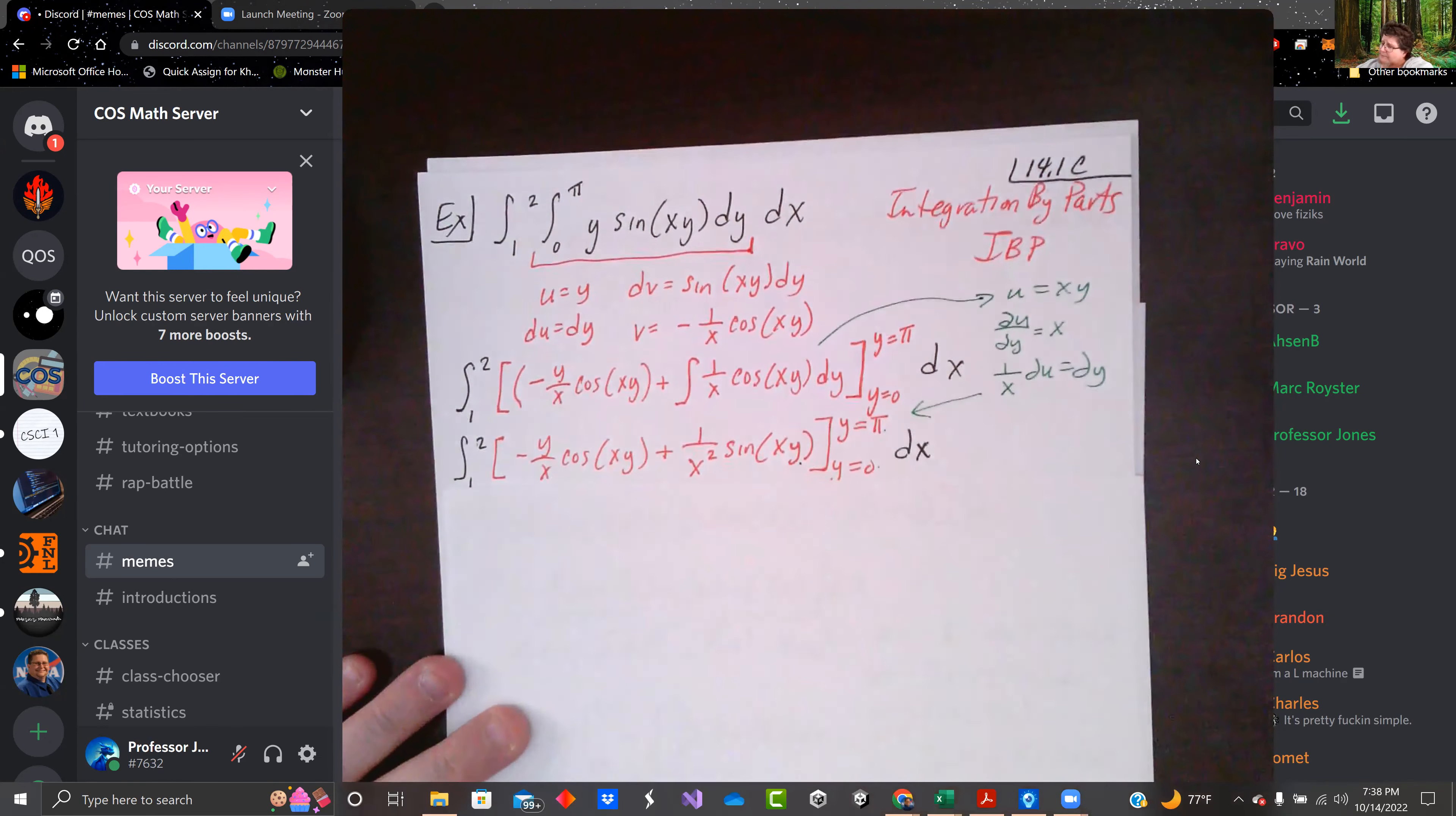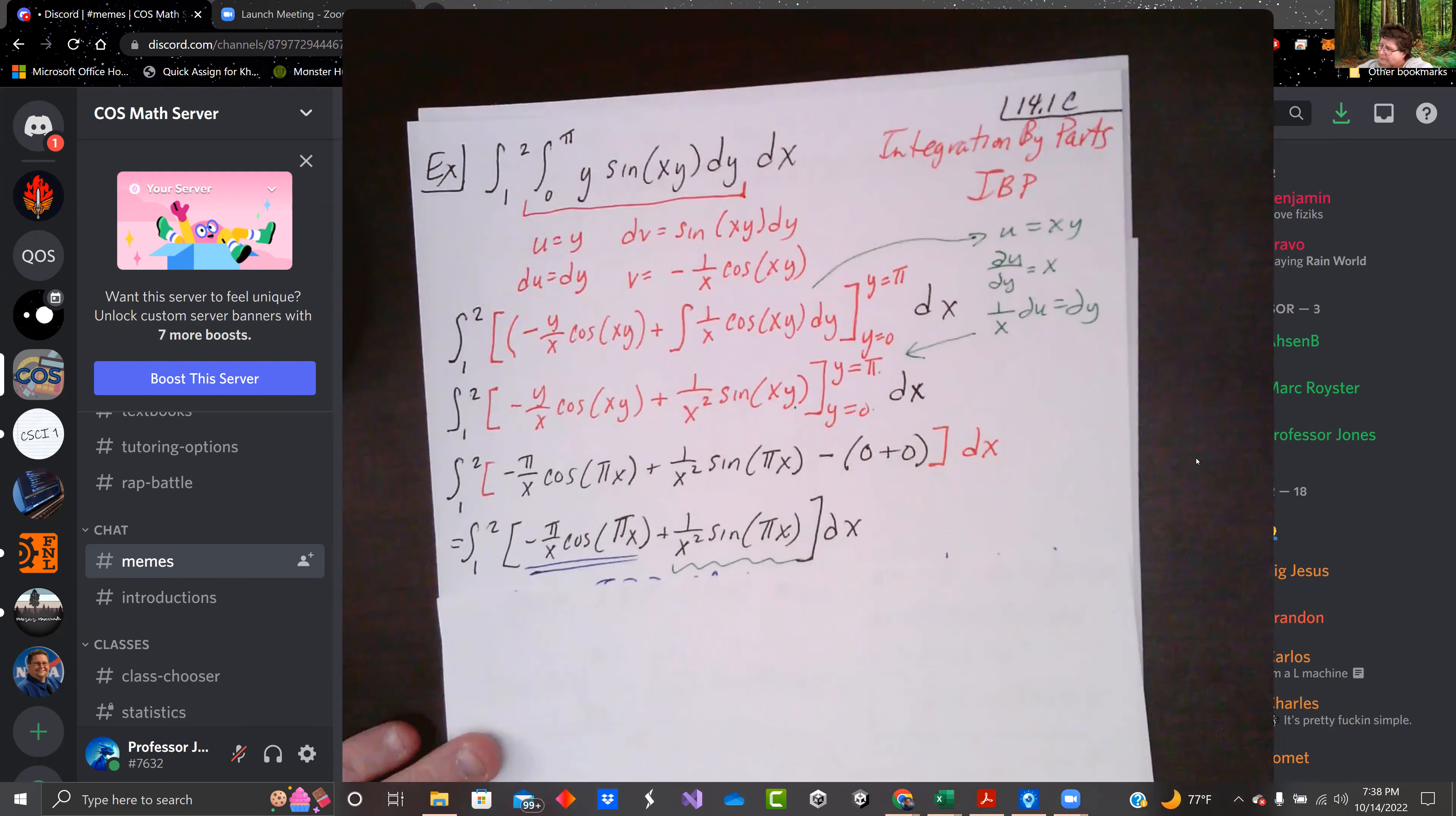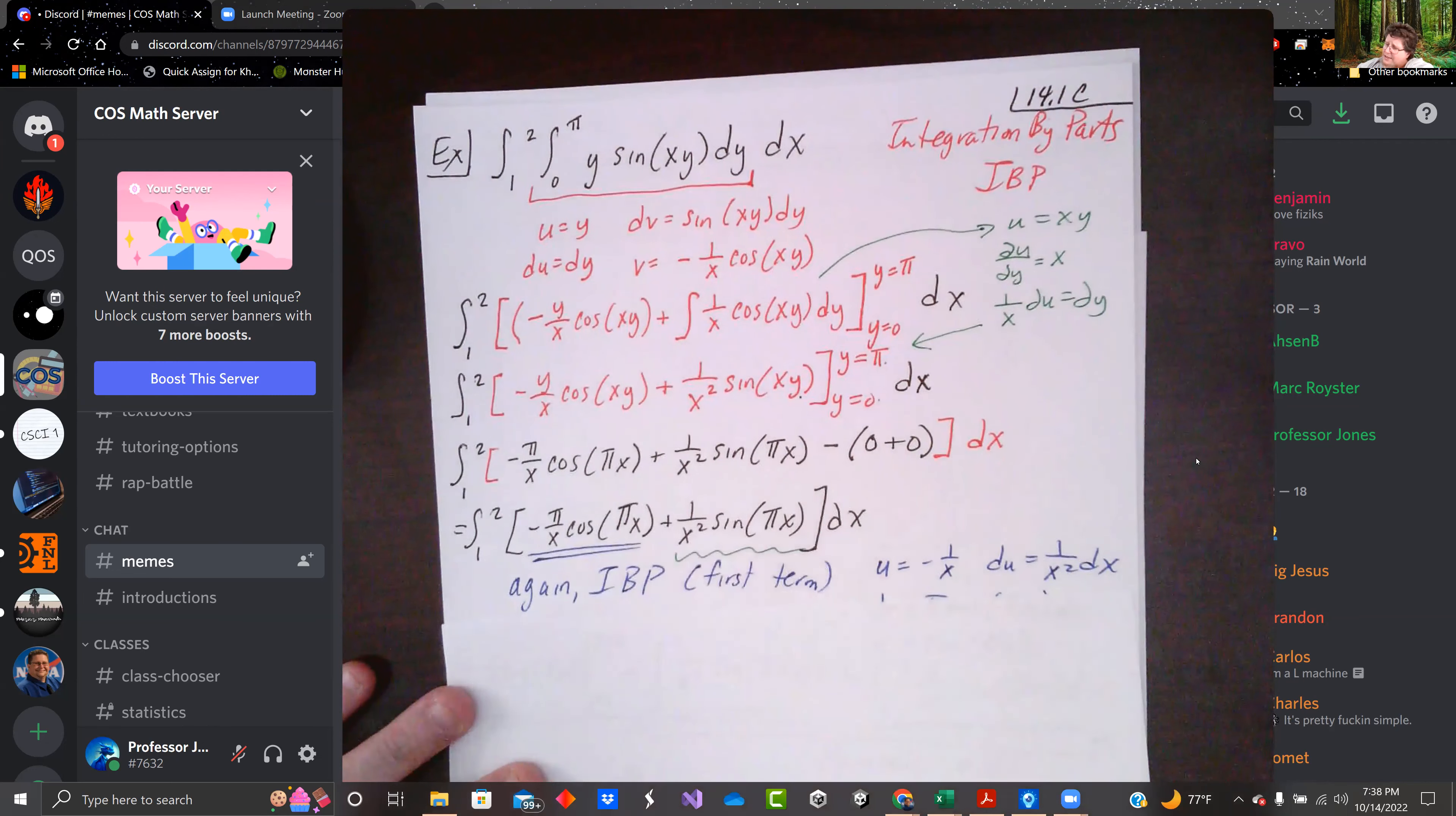We evaluate it from y equals zero to pi. You can verify that. Look through it. I got down to here. So I've got x in the denominator again outside and x inside.